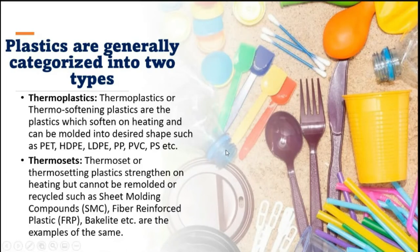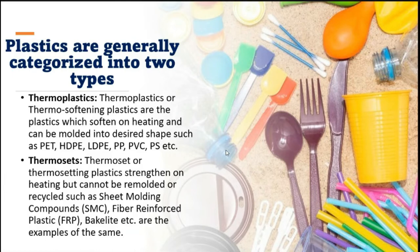Plastics are also categorized as thermoplastics and thermosets. Thermoplastics soften upon heating and can be molded into desired shapes — examples include PET bottles, HDPE, LDPE, polypropylene, PVC, and polystyrene. Thermosets, or thermosetting plastics, strengthen on heating but cannot be remolded or recycled. Examples include sheet molding compounds like fiber-reinforced plastics and Bakelite.